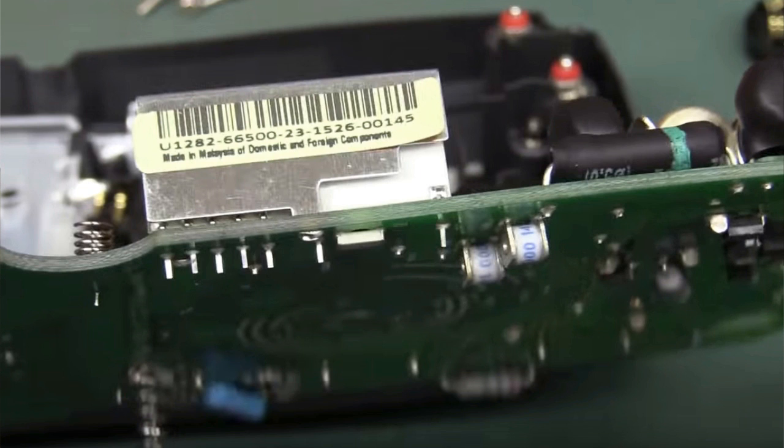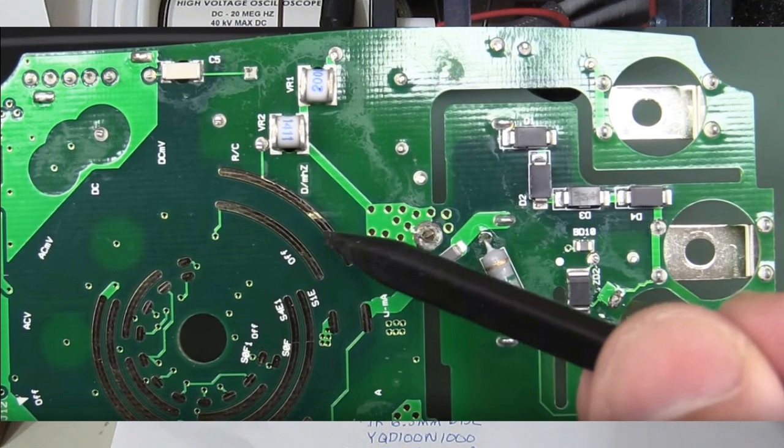We can see the GDTs are marked 2000-1411. I suspect the part is made by Little Fuse and is a SL1411 series, but I'm not sure of that. That series is not offered as a 2kV part.